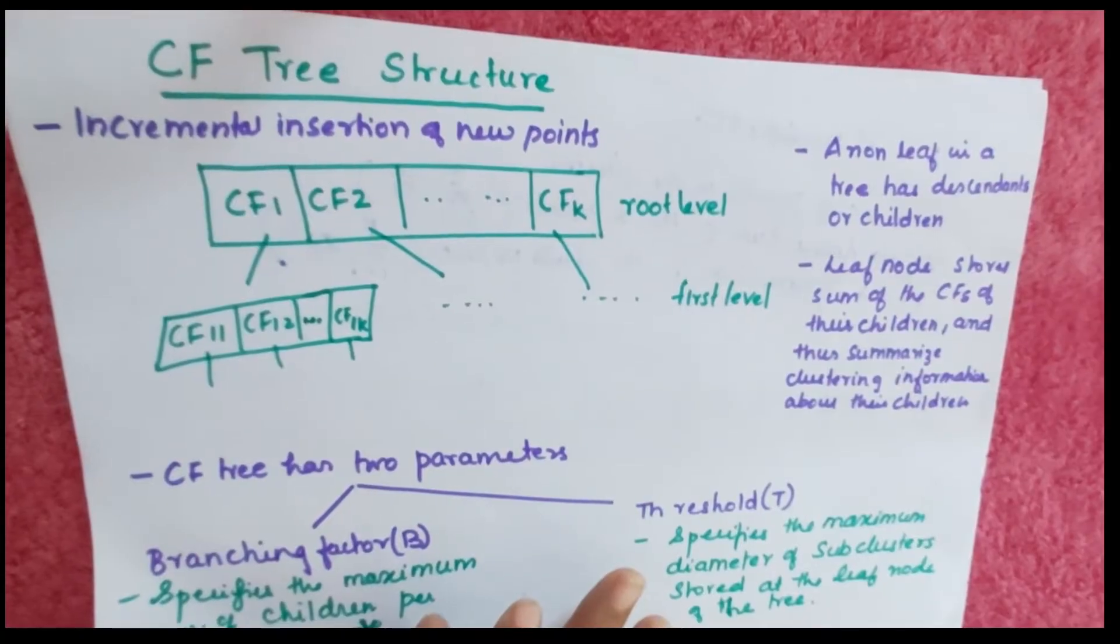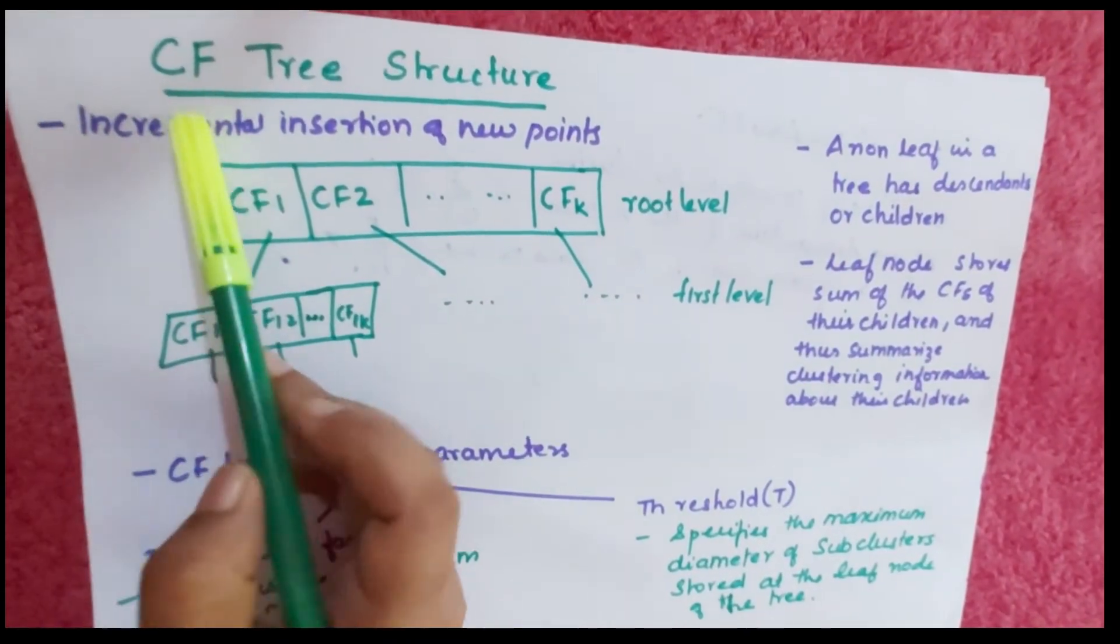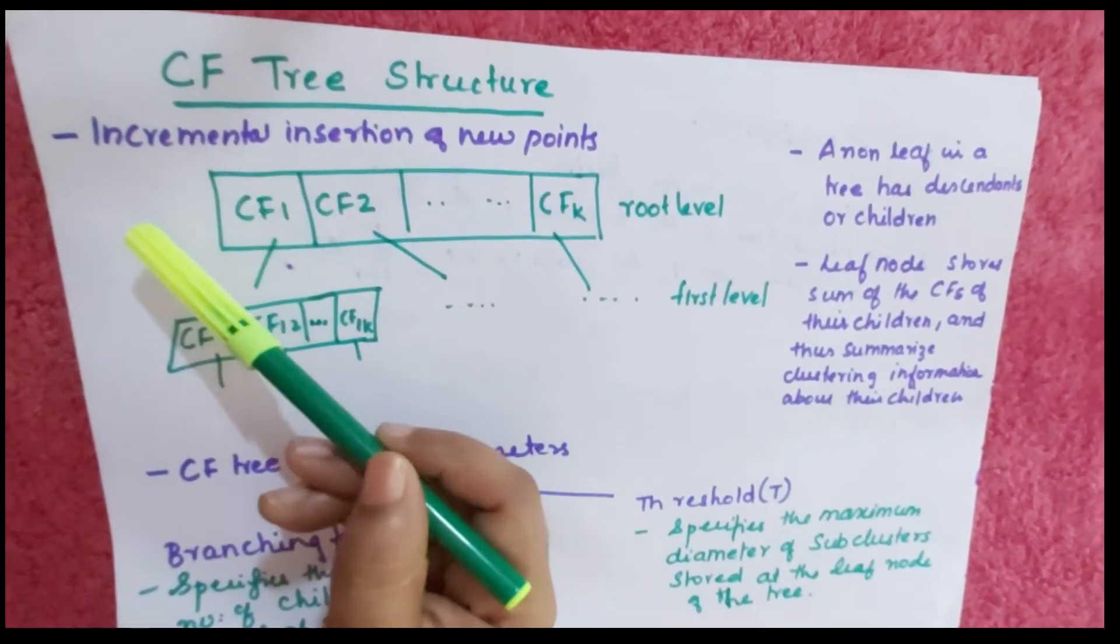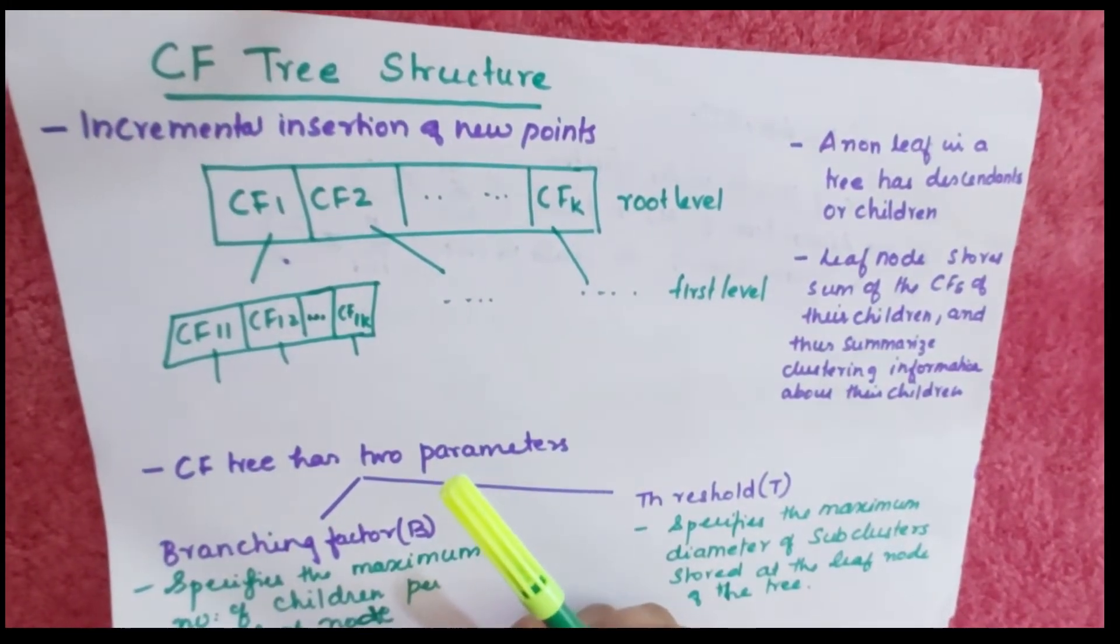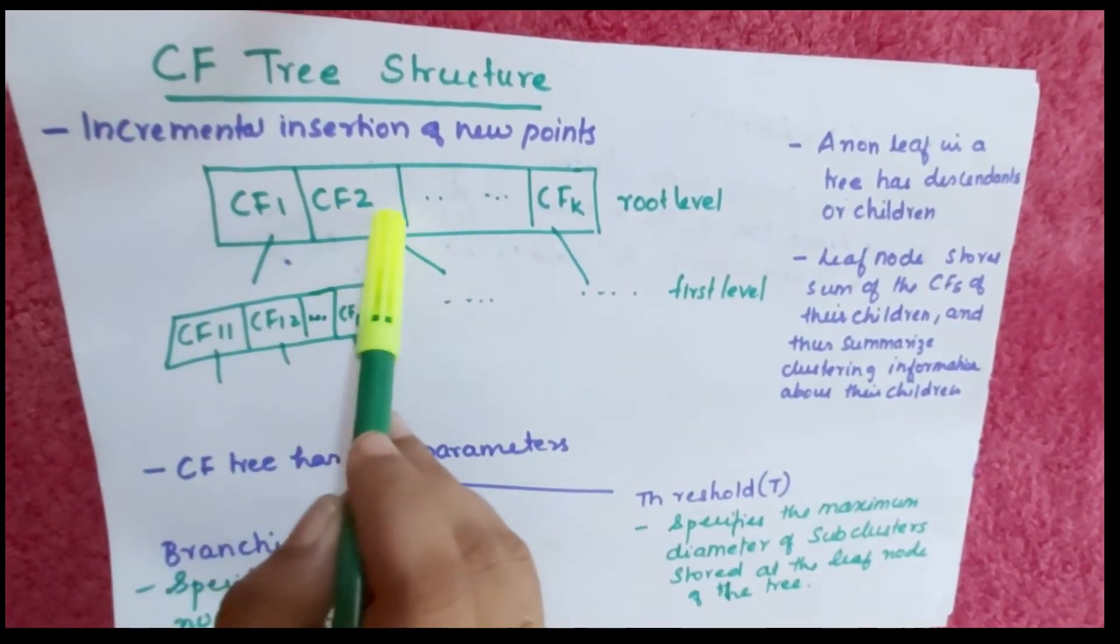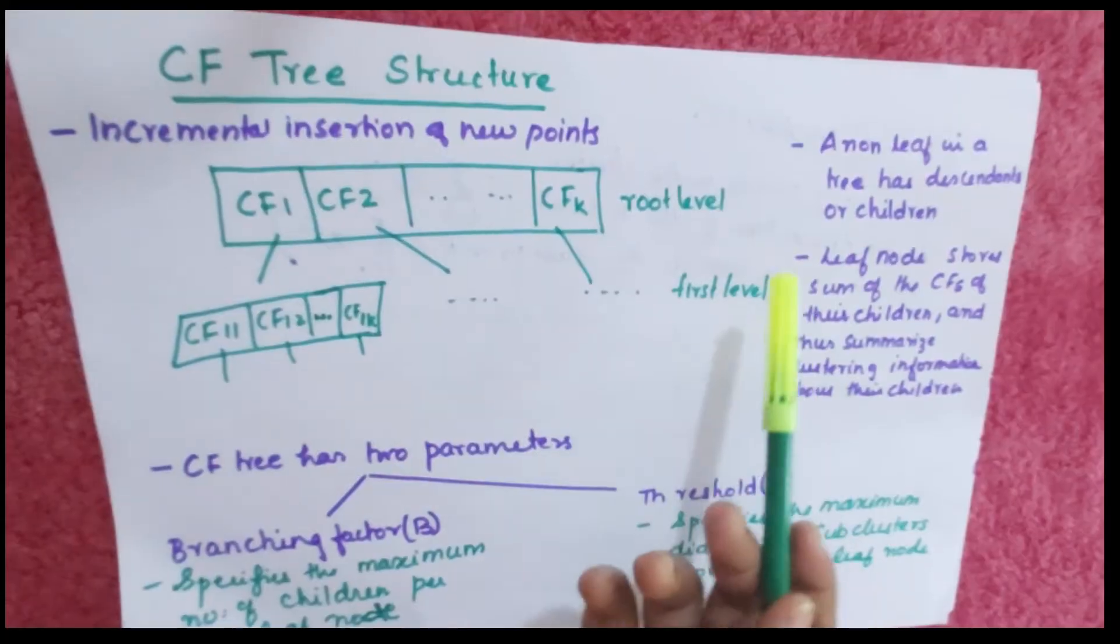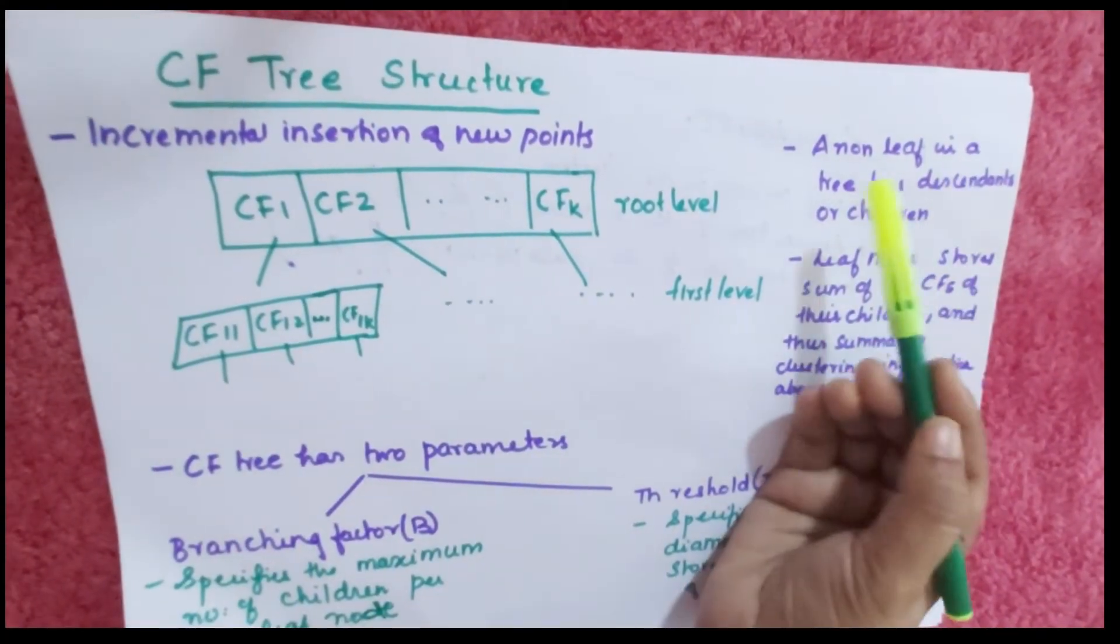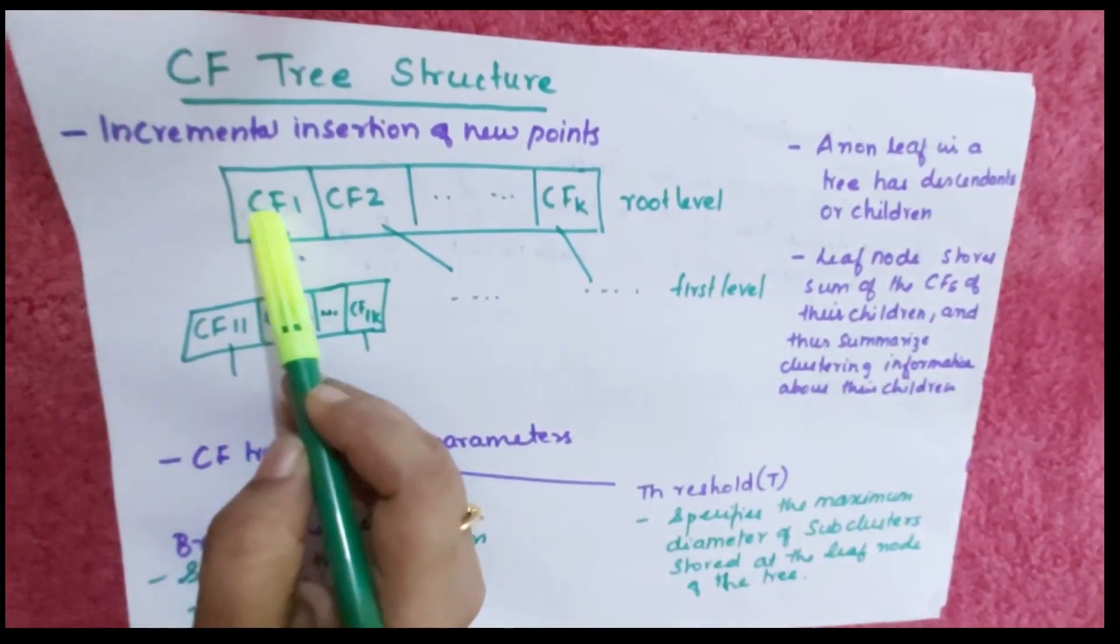When the CF clustering feature is done, we study the clustering feature tree. The CF tree involves incremental insertion of new points. You can see this - this is the root level with CF1, CF2 through CFk.